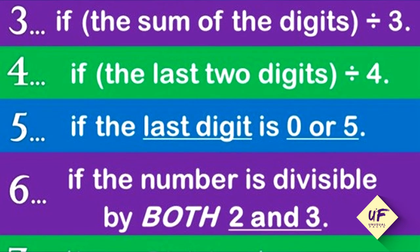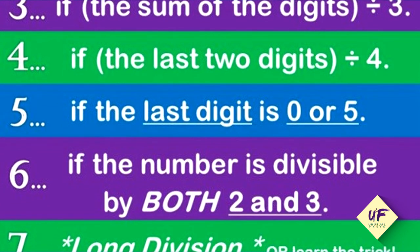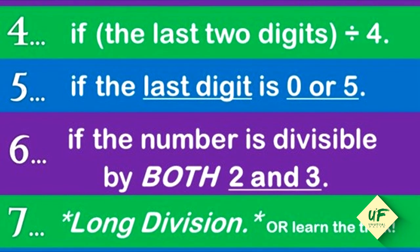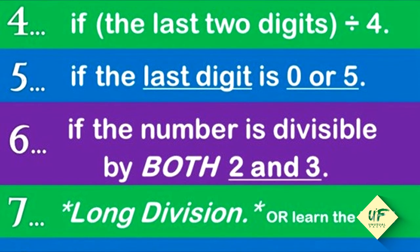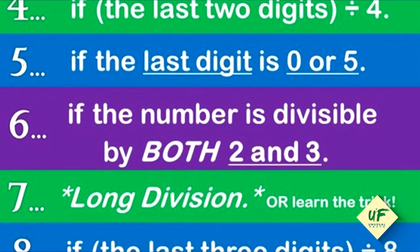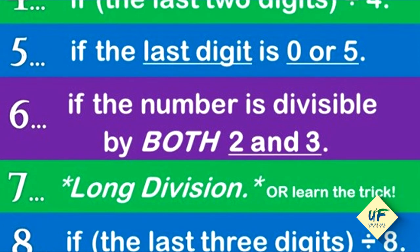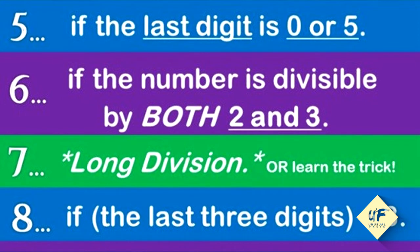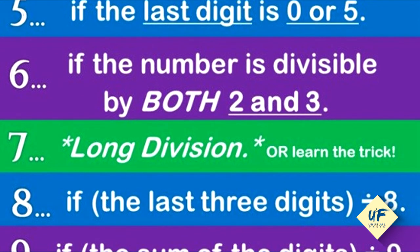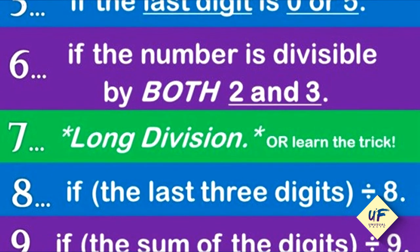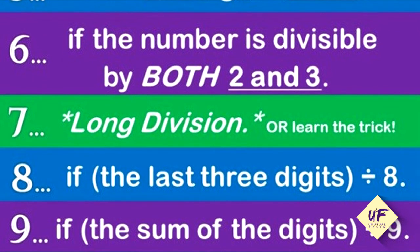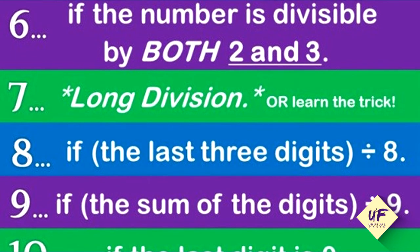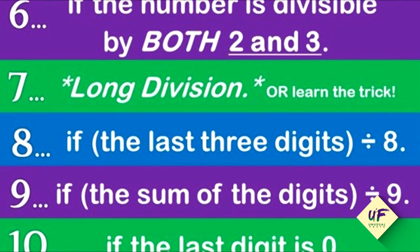A number is divisible by 6 if the number is divisible by both 2 and 3. A number is divisible by 7: long division, or you should learn the trick. A number is divisible by 8 if the last three digits are divisible by 8. A number is divisible by 9 if the sum of the digits is divisible by 9. A number is divisible by 10 if the last digit is 0.